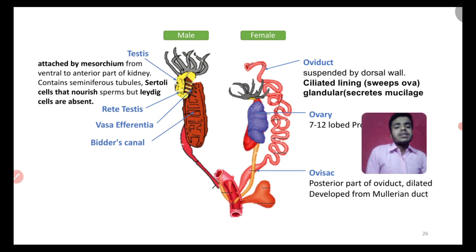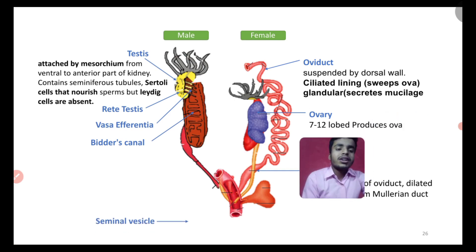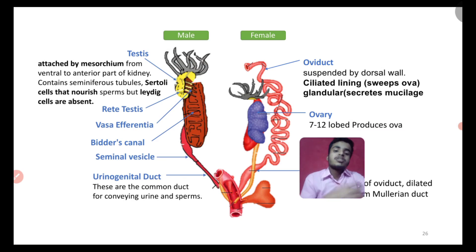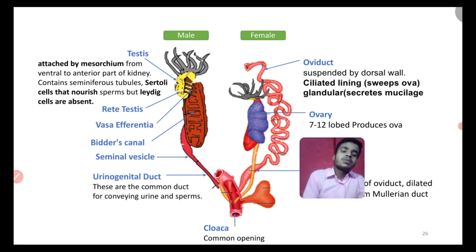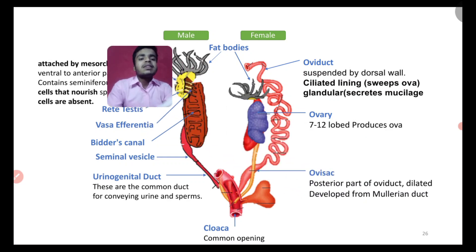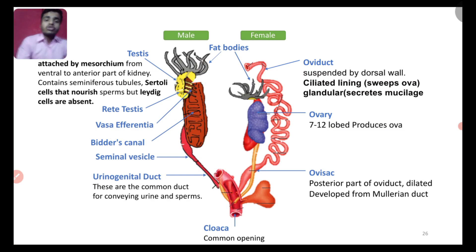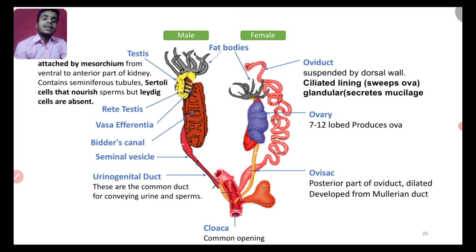From the rete testis, sperm pass through the efferent ductules into the kidney, specifically via Bidder's canal. Bidder's canal is found in the kidney in relation to the testis — do not forget this. After Bidder's canal, the sperm exit through the urinogenital duct. The urinogenital duct has a coiled region called the seminal vesicle. The urinogenital duct is the common passage for sperm and urine, both exiting through the cloaca.